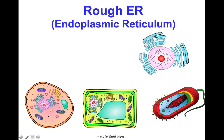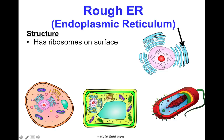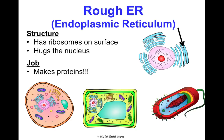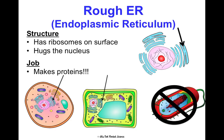The rough ER — rough endoplasmic reticulum — is pictured right next to the nucleus, which it hugs. It has ribosomes on its surface, which is why we call it rough. Its job is to make proteins because of those ribosomes. You can see it in both animal and plant cells, but not in the prokaryotic cell.